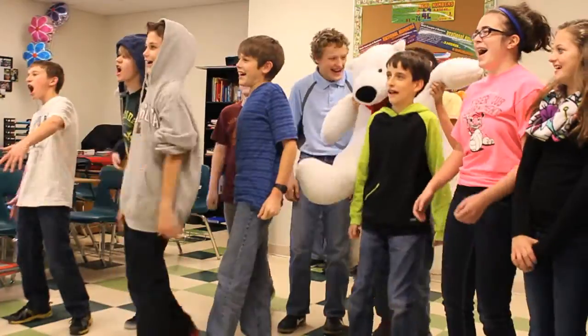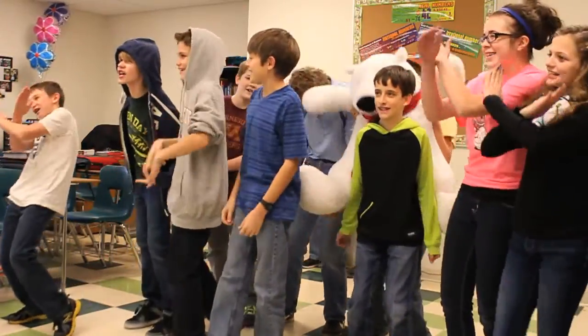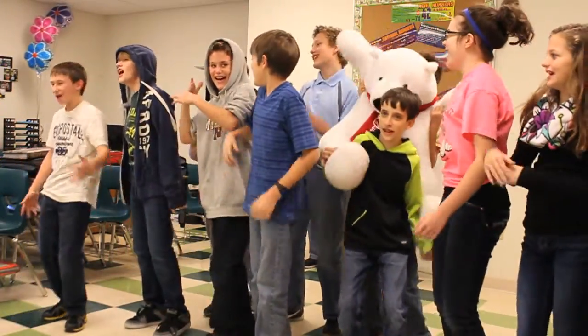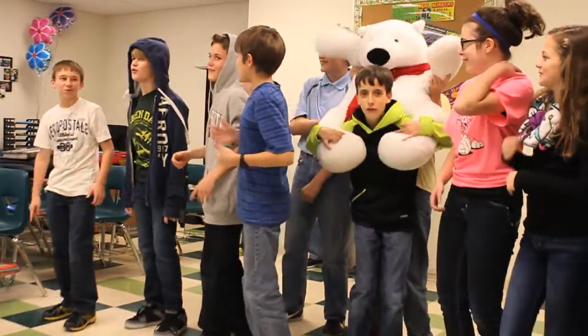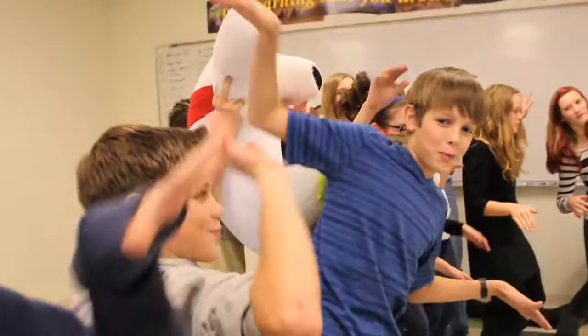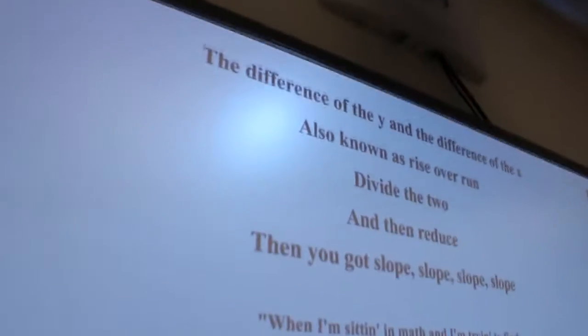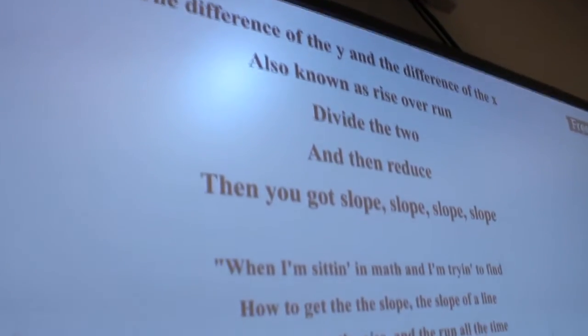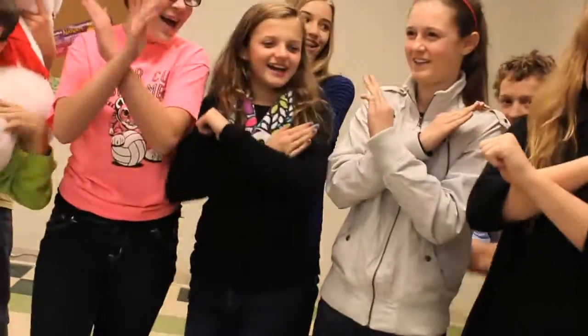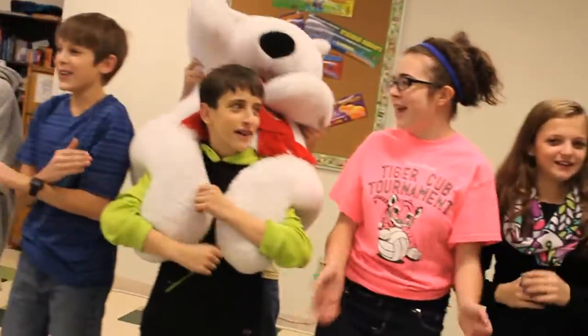The difference of the Y and the difference of the X, also known as rise over run. Divide by two, and then reduce, and you got slope, slope, slope, slope, slope, slope. The difference of the Y and the difference of the X, also known as rise over run. Divide by two, and then reduce, and you got slope, slope, slope, slope.